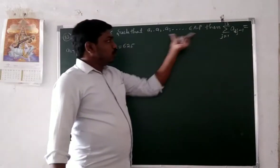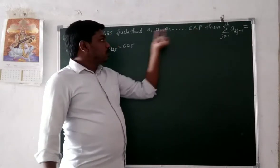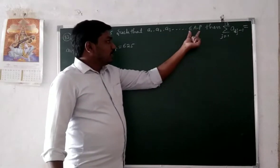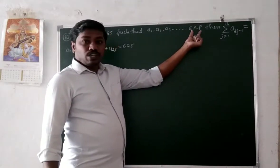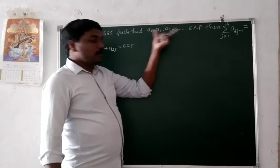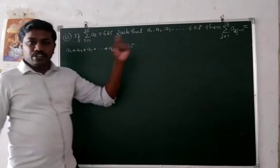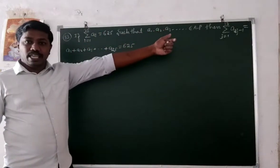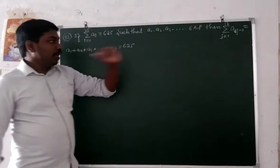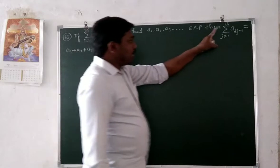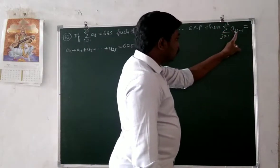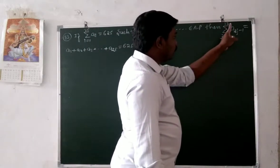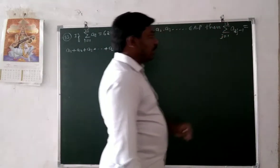a1 to an forms an AP. So a1, a2, a3 up to an belong to AP — meaning a1, a2, a3, a4 are in AP. Then we need the summation of a(2j-1), with j running from 1 to 13.